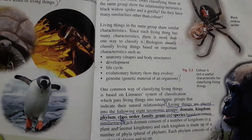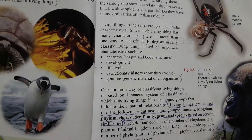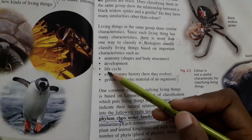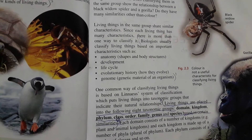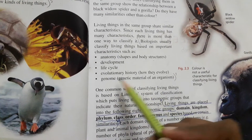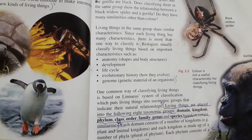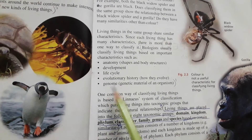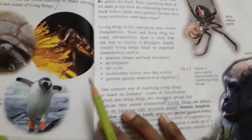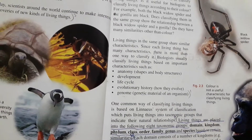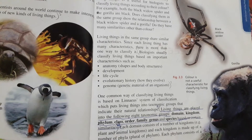Development means that when a new individual has developed from egg cells, the development stages are similar. Life cycle means that organisms with the same life cycle are kept in the same group. Evolutionary history means where they evolved from — back in history, whether their ancestors were the same. The last method is genome. As technology has improved and genetic makeup is easier to study, the genome is now used for classification.